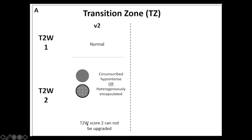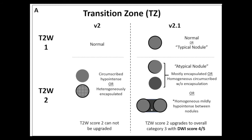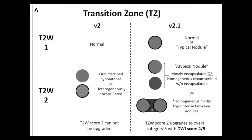In version 2, lesions scored as a 2 could not be upgraded from there. In version 2.1, since a normal gland without BPH changes is pretty rare and typical BPH changes can confidently be called benign, it was proposed that typical BPH nodules that were completely encapsulated could be assigned a score of 1. Version 2.1 also introduced a new set of terms scored as 2, including atypical nodules that were mostly but not completely encapsulated, circumscribed unencapsulated nodules, and homogeneous mildly hypo-intense T2 signal between two BPH nodules. These are lesions that might have received a higher score in version 2 and potentially resulted in biopsy, but were now being downgraded to a score of 2.